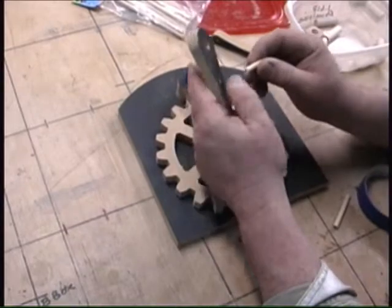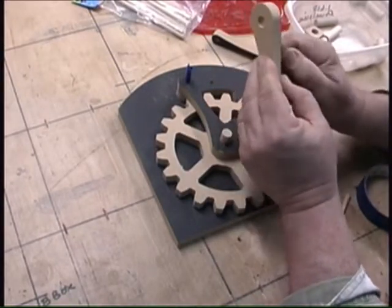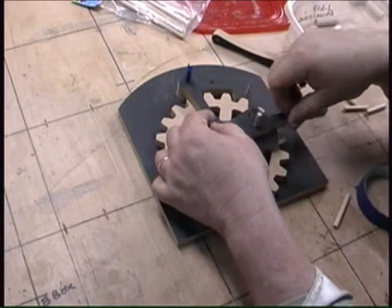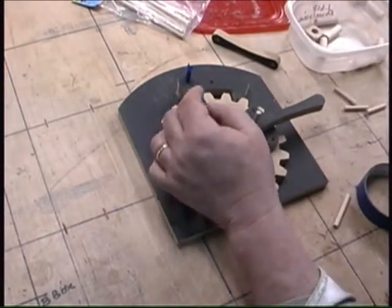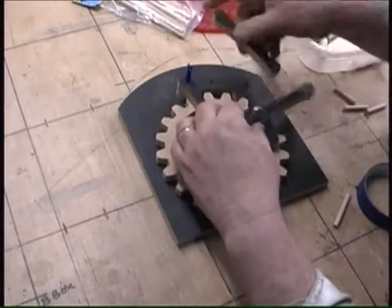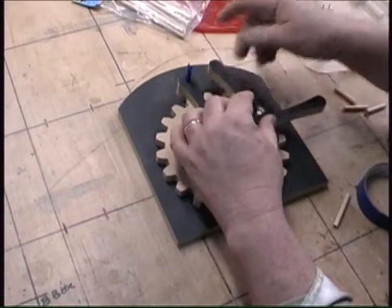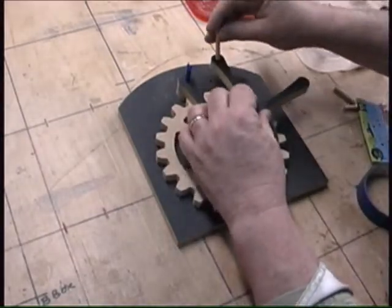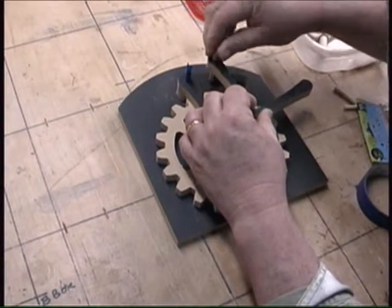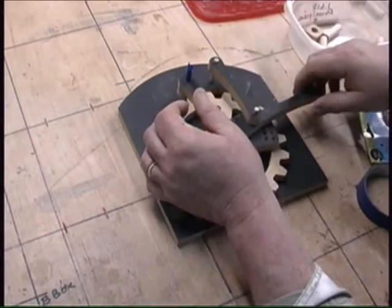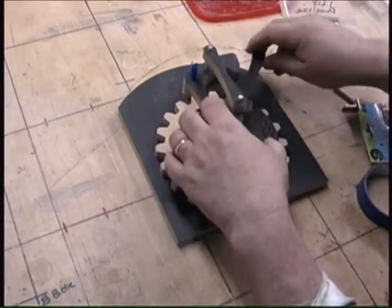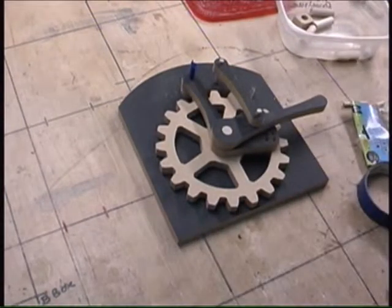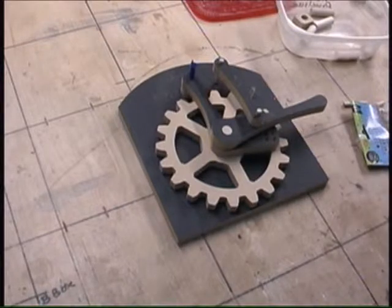So I've got the hole drilled. I made it a little bit smaller so that it would be tight. Now I've got to figure out how to line up this, and I think I'll probably need a little longer dowel. Now this is really loose and kind of crazy, but it's just a concept piece at this point and it doesn't have to be perfect.